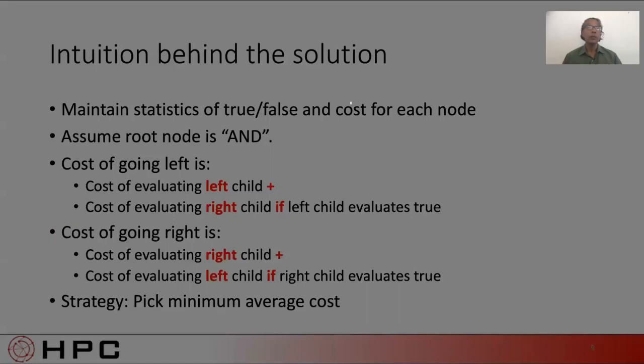Similarly, if we went right first, we are definitely on the hook for paying the cost of the right child. And we may end up having to pay the cost of the left child if the right child evaluated to true. So the strategy is to pick the minimum average cost.